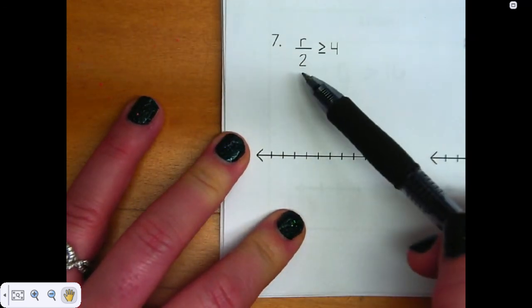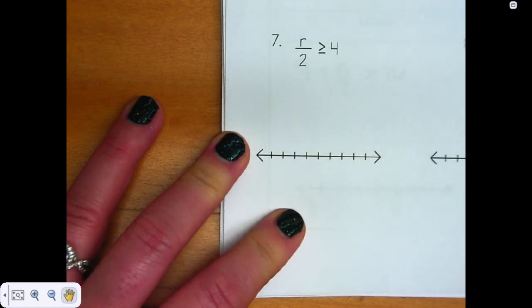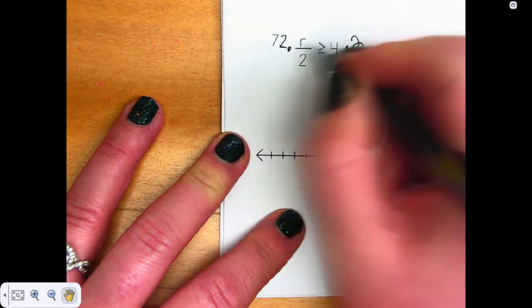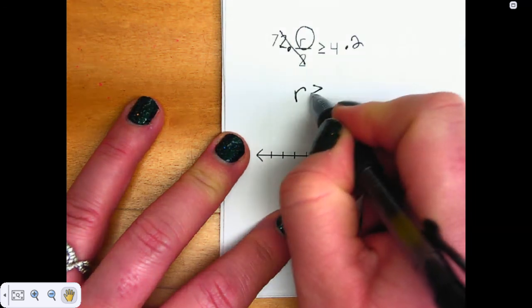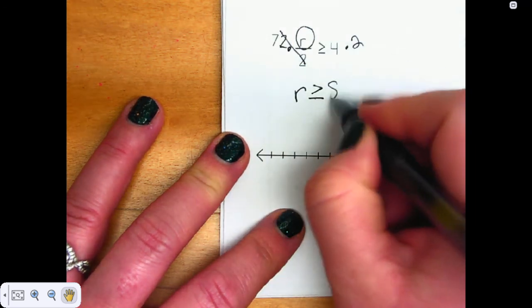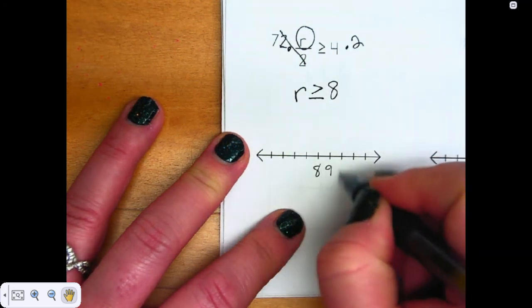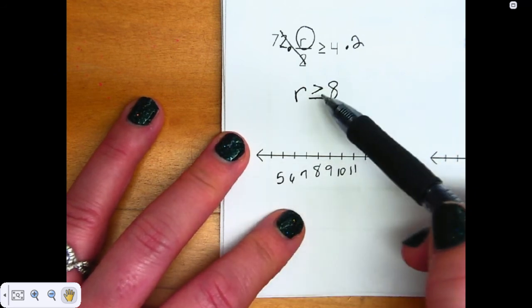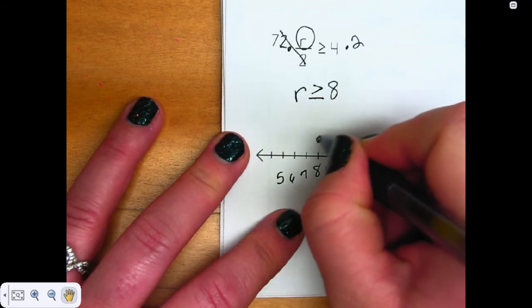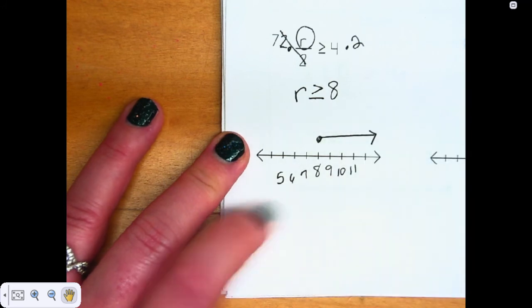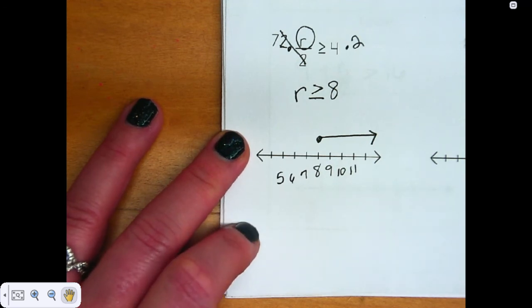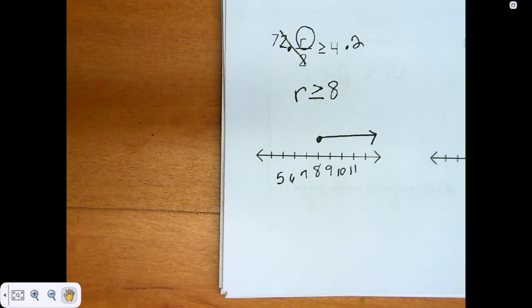This says r divided by 2 is greater than or equal to 4. We need to get our variable by itself — r is being divided by 2, so I need to multiply both sides by 2. This goes away and I'm left with r is greater than or equal to 4 times 2, which is 8. So I'm going to put numbers to the right and left of 8. R is greater than or equal to, so that's a closed dot, and the greater than numbers go to the right. A potential answer could be 8, 20, or 1 million — I just know it's greater than or equal to 8.